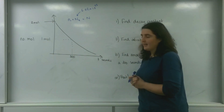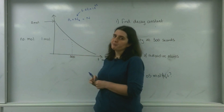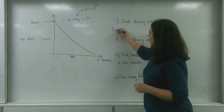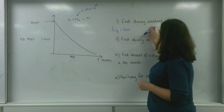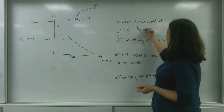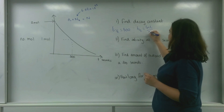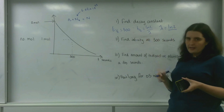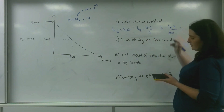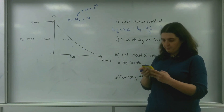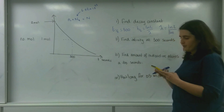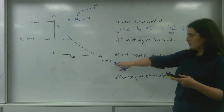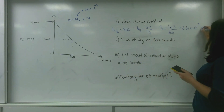First, find the decay constant. Luckily I have been given the half-life of this material. I know the time it takes to go from two moles to one mole is 300 seconds, so the half-life is 300 seconds. Using the formula T½ = ln2 / λ, the decay constant λ = ln2 / 300. Calculating that gives 2.31 × 10⁻³ per second.